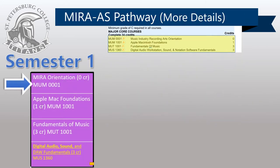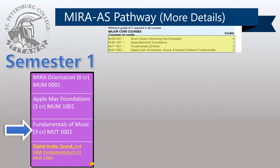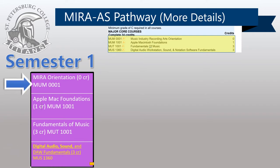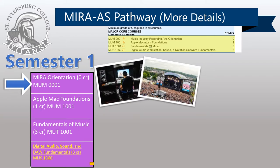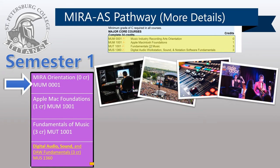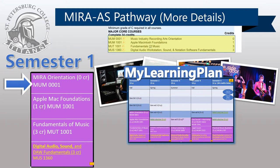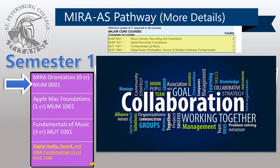MIRA Academic Core courses include the following. Semester 1 Core consists of MUM-0001 MIRA Orientation, MUM-1001 Apple Mac Foundations, MUT-1001 Fundamentals of Music, and MUS-1360 Digital Audio Workstation Sound and Notation Software Fundamentals. The MIRA Orientation is a zero-credit course where you meet once a week. You will gain an overview of the music industry and potential employment opportunities by meeting all MIRA faculty as guest presenters. You will complete your own personalized academic pathway scheduling plan with guidance from our faculty and advisors. And you will participate in a collaborative creativity project that lets you showcase your talents and sets the stage for the type of synergistic collaboration required of this degree and industry.